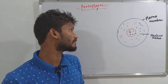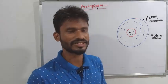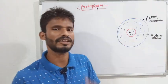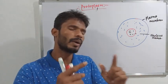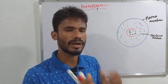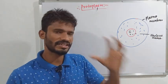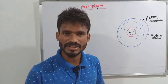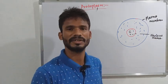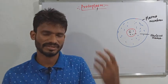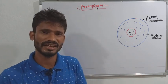Welcome to another lecture on biology. This will be a lecture on protoplasm and cytoplasm. In the last lecture, we already discussed the cell wall of a eukaryotic cell — the primary cell wall, middle lamella, etc.